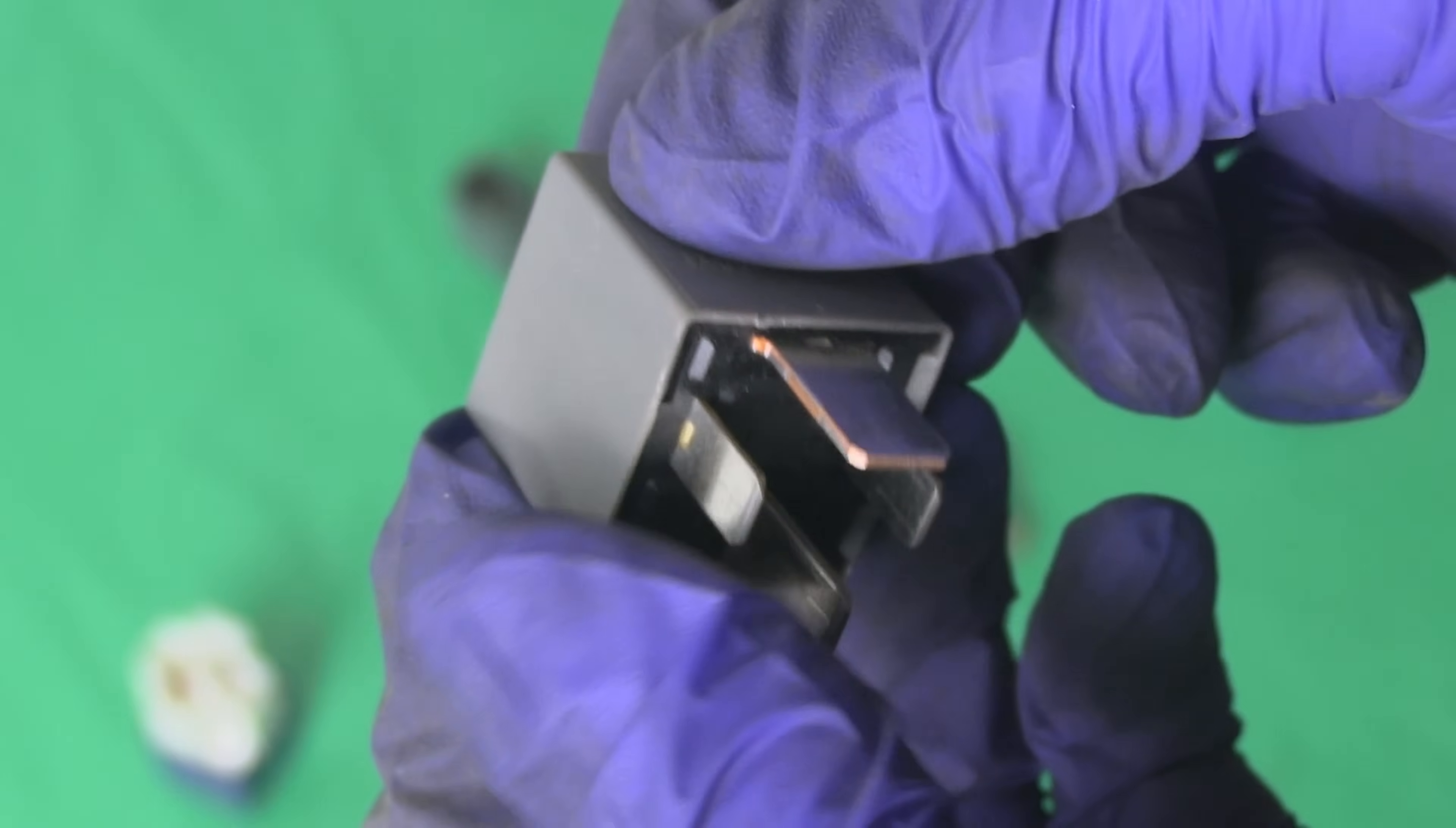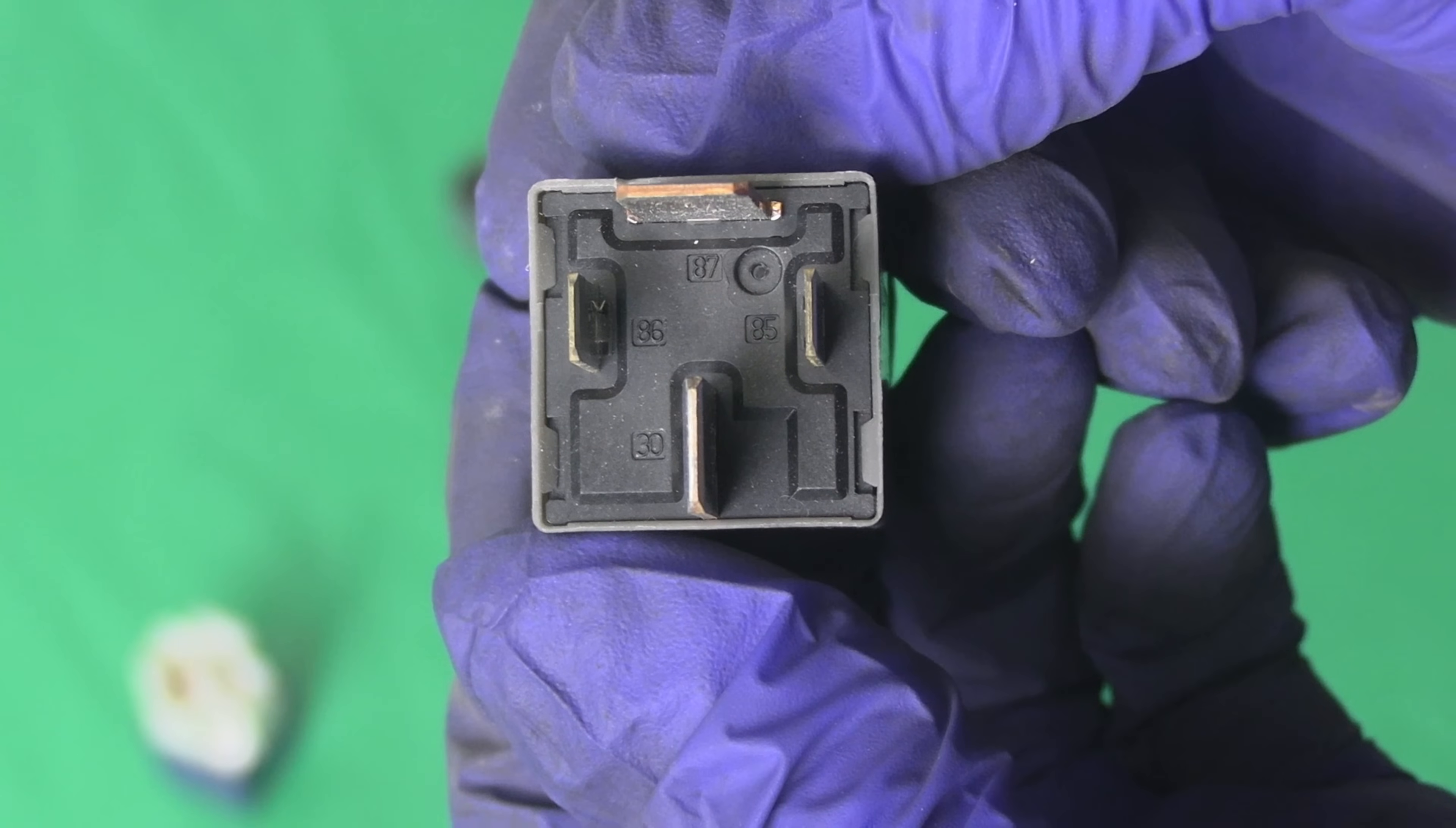If you can't find the numbers on your relay, here is a tip. Usually the control circuit pins will be parallel to each other on the outside of the relay and the load circuit pins 30 and 87 will be in between the control pins perpendicular to each other.